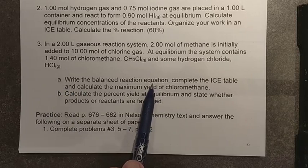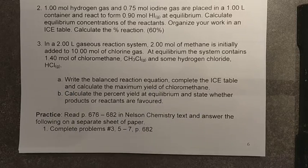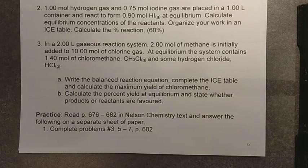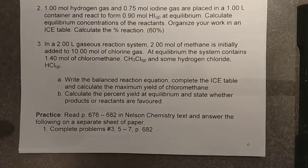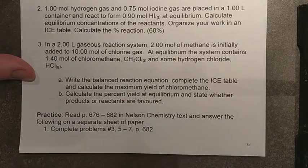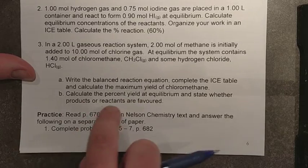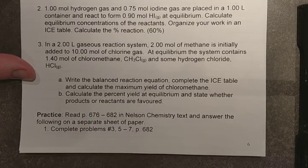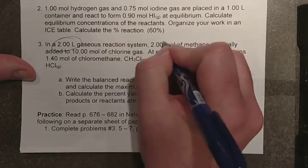Again, we need to start with that balanced reaction, complete the ice table, and calculate any maximum yield for chloromethane. So this will take three stoichiometric steps for us. There's a shortcut that I'm going to introduce to you guys to help you out with it, and we can calculate that percentage yield and state the position at equilibrium. Note the units, however.